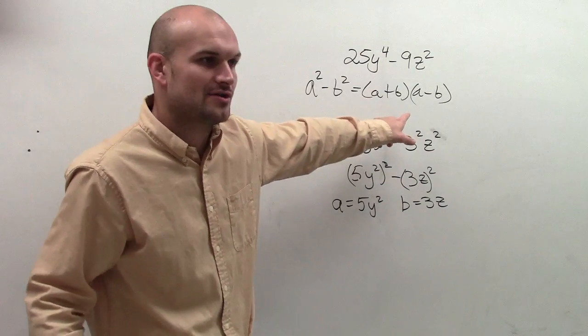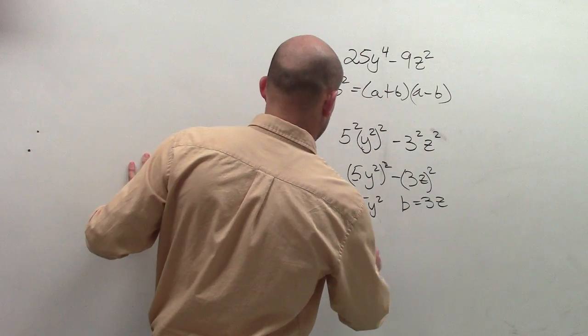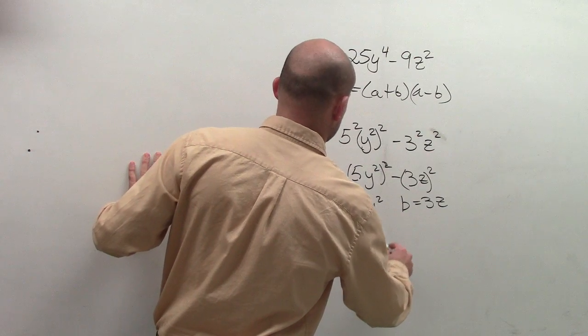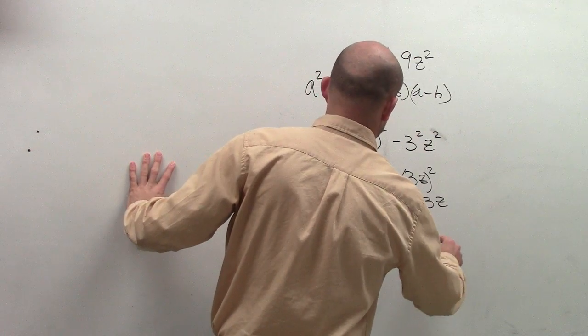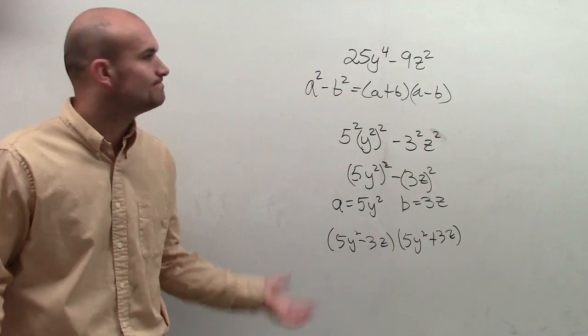So now when I just want to do my factoring form, all you got to do is plug in a and b there. So what you're going to have is 5y squared minus 3z times 5y squared plus 3z. There you go.